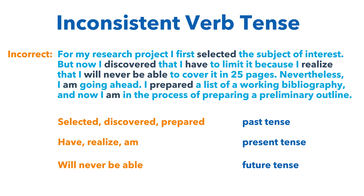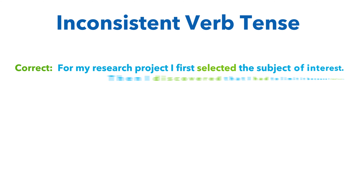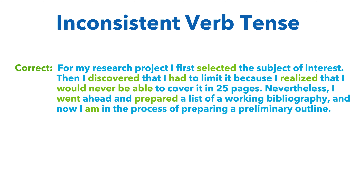Here is how you would rewrite the paragraph so all verbs are consistent: 'For my research project, I first selected the subject of interest. Then I discovered that I had to limit it because I realized that I would never be able to cover it in 25 pages. Nevertheless, I went ahead and prepared a list of a working bibliography, and now I am in the process of preparing a preliminary outline.' Note that 'am' is present tense, but it is acceptable here because the word 'now' clearly indicates the present time.